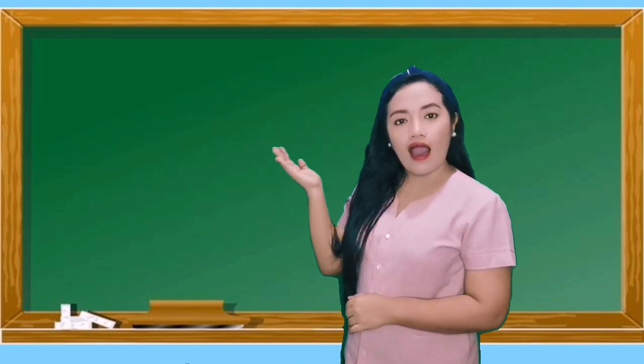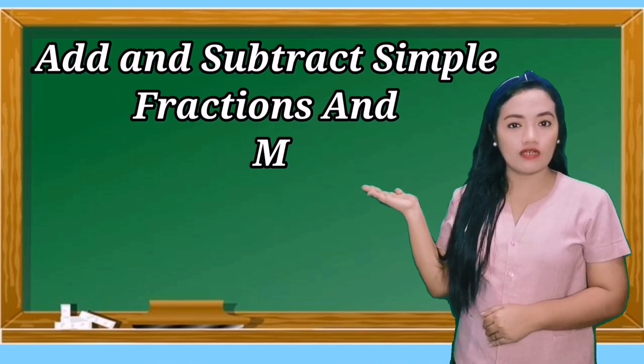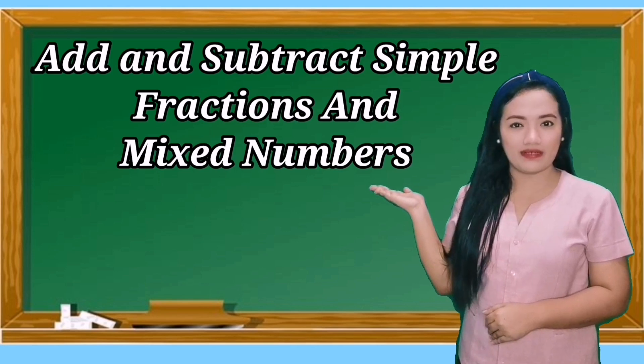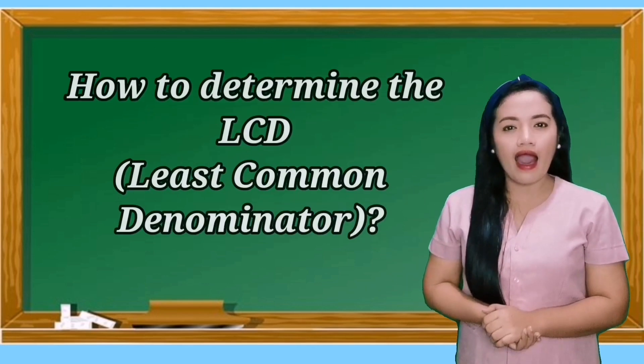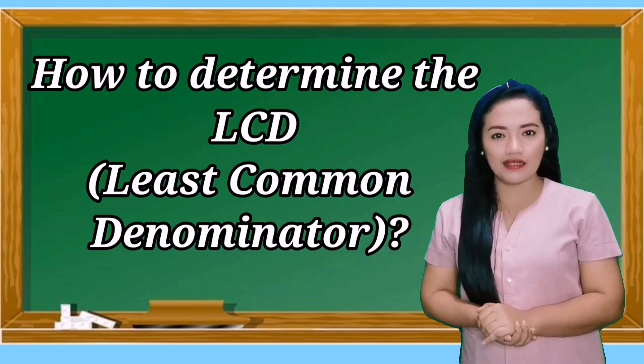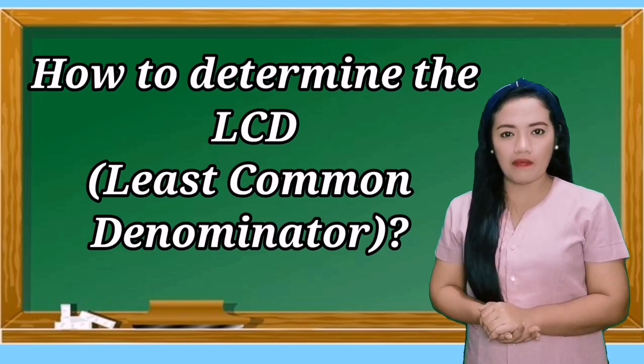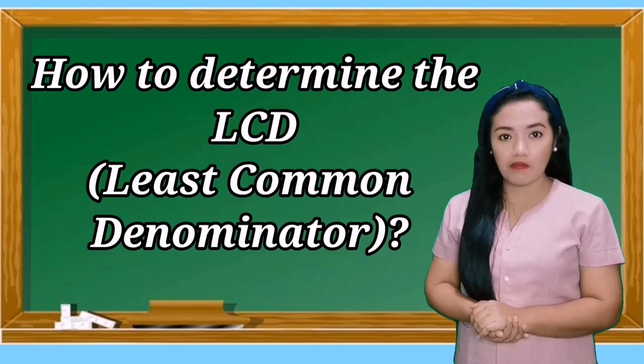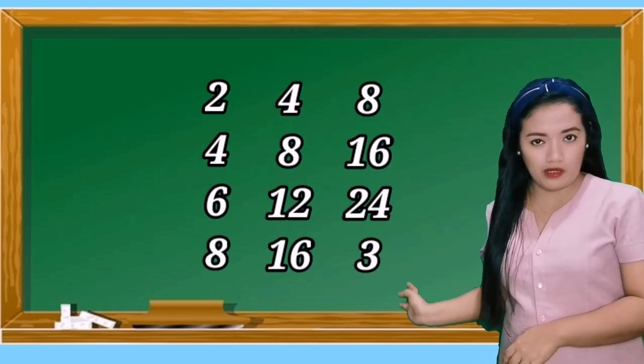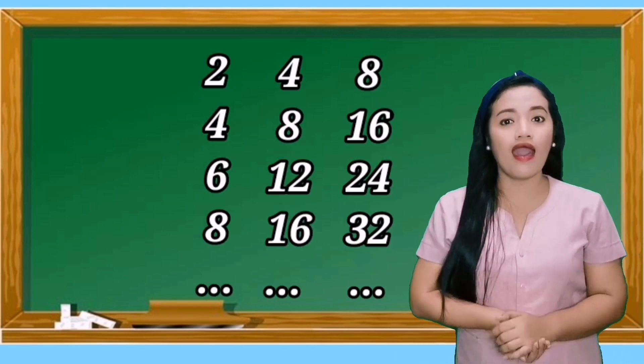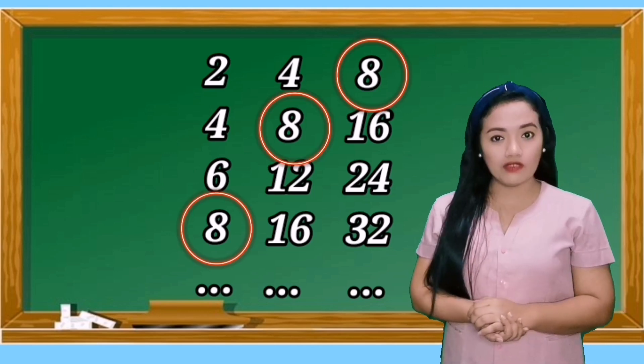At the end of the lesson you will be able to add and subtract simple fractions and mixed numbers. Let us start by recalling how to determine the LCD or least common denominator with a set of numbers. To do that you have to list down all the multiples of the numbers and get the least common multiple.